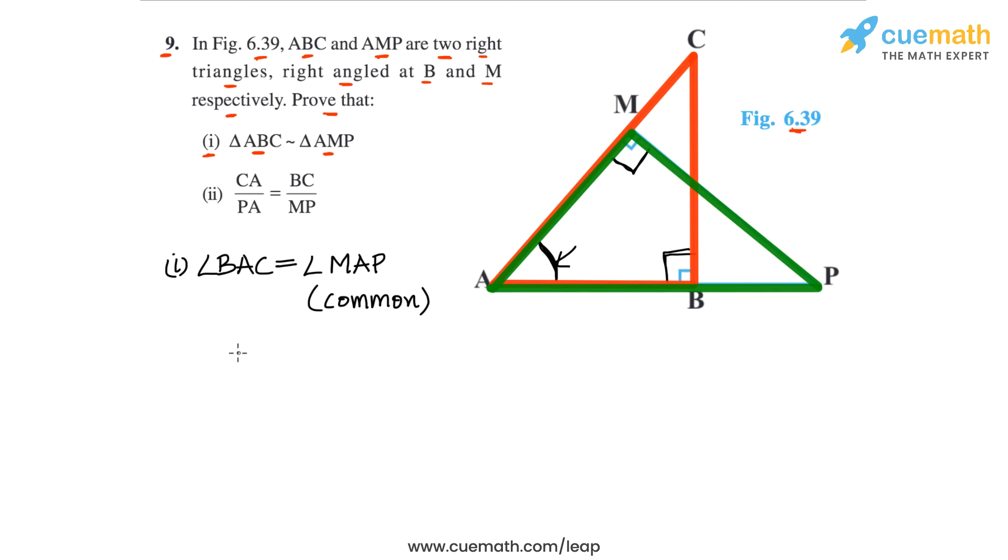So it's this angle. Then we have angle ABC in the first triangle equal to angle AMP in the second triangle, because both of these angles are equal to 90 degrees.